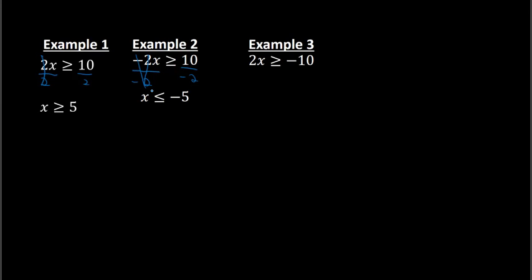Example 3: we have 2x is greater than or equal to negative 10. Here we need to divide both sides by 2. We have x on the left, negative 5 on the right. But here we're not dividing by a negative number — we're dividing by a positive 2. So no need to switch the inequality; it's going to remain a greater than sign. So my answer is x is greater than or equal to negative 5.